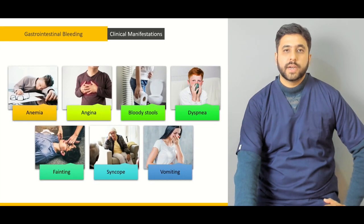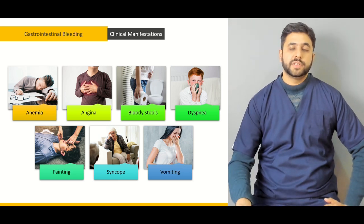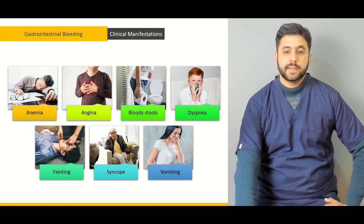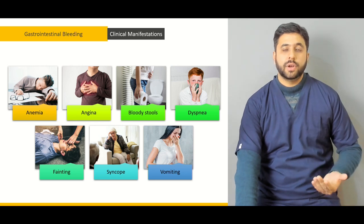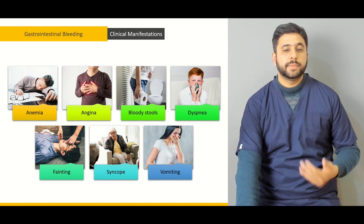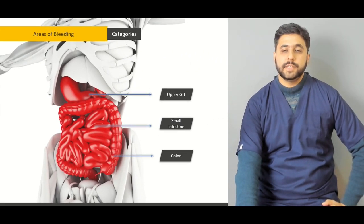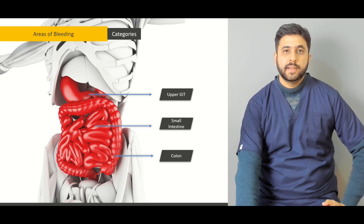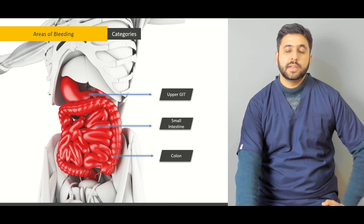Then we are going to look at the various clinical manifestations, whether the GI bleeding is overt or visible to us, or what are the clinical signs and symptoms of occult or hidden GI bleeding — what are the various symptomatology that raises our suspicion of someone presenting with GI bleed. The areas of bleeding will be characterized into the upper GI, the small intestine, or the colon, and what are the various presentations of the different areas of bleeding which help us in characterizing that bleeding into an upper GI and a lower GI bleed.